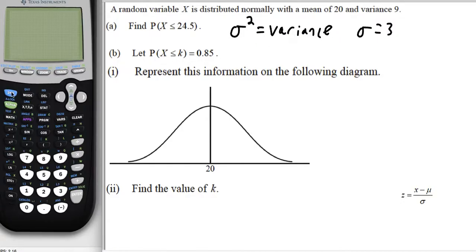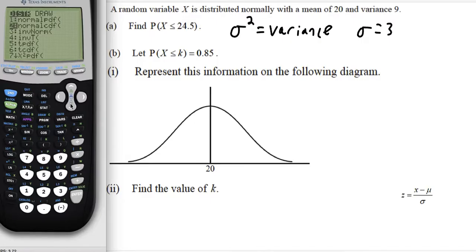Now we can hop over to the calculator. When we go into distribution, we want normal CDF. The lower boundary can be sort of negative infinity. We just pick a very large negative number. In case you don't have this number there, the way we would write it is negative 1, and then we want EE, which is in blue. There it is, right there, right above the comma.